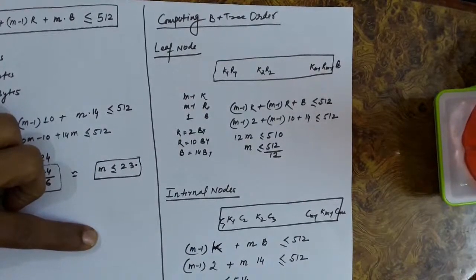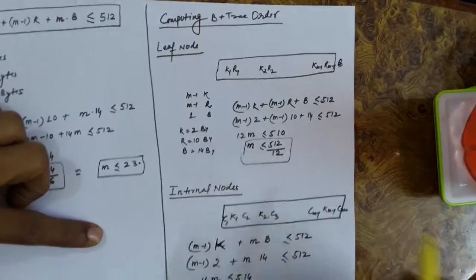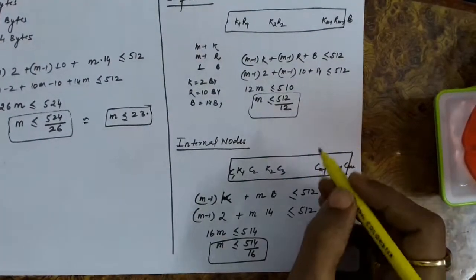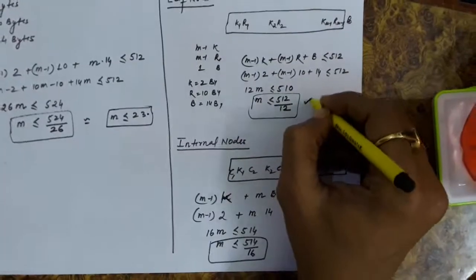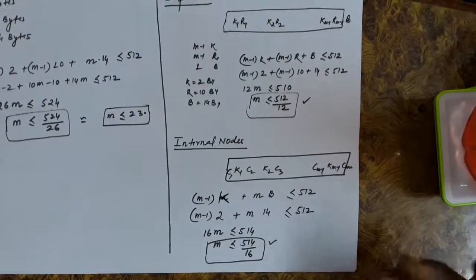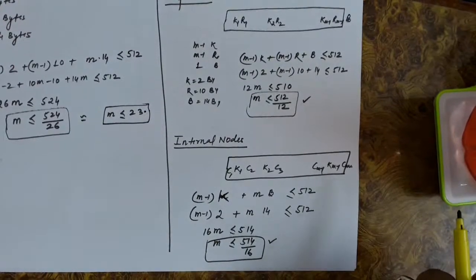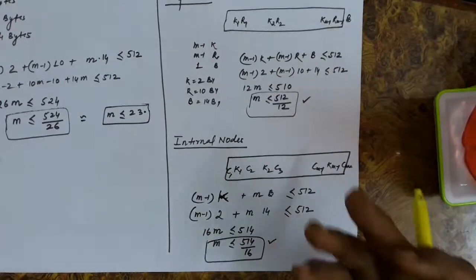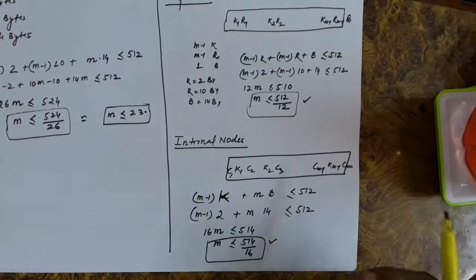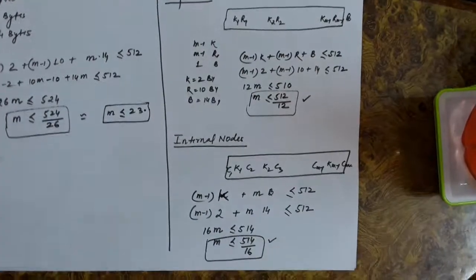If you compute these values, you will be able to find m. Now you can see that in the B+ tree, the order of the leaf node is different and the order of the internal nodes is different. Although we can take the minimum of these two to build a B-tree, if you want to design a B+ tree, the order of the leaf node and the order of the internal nodes can be different.